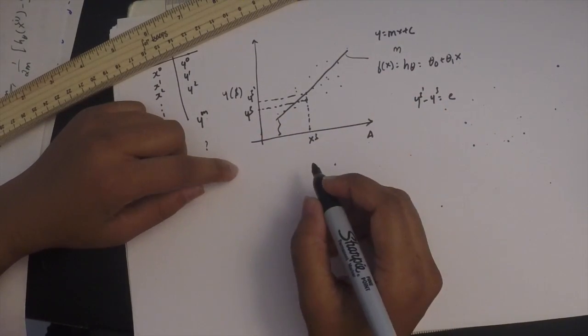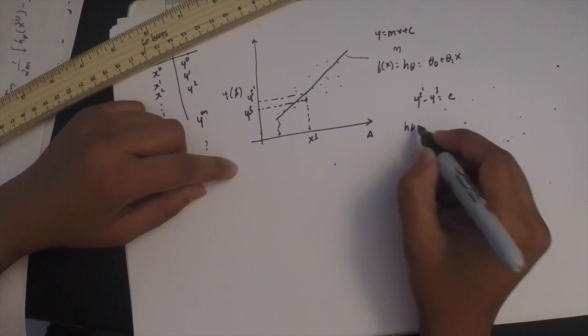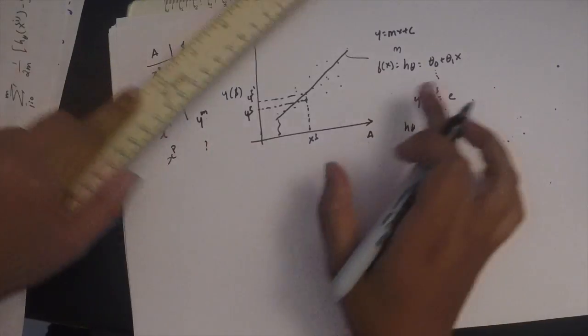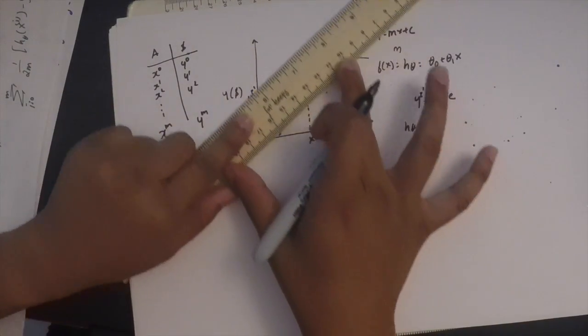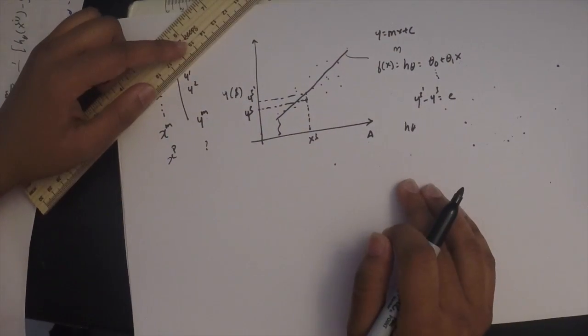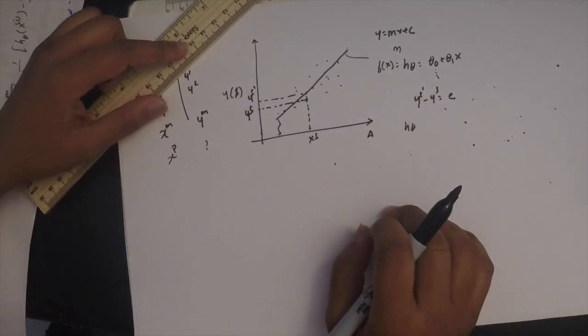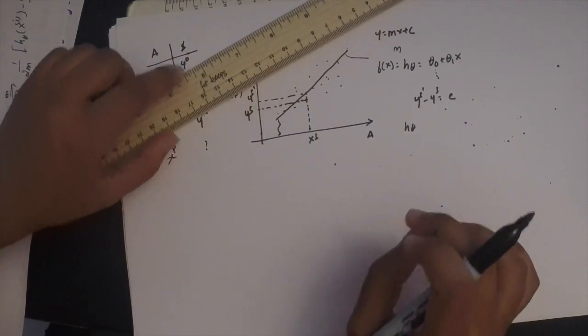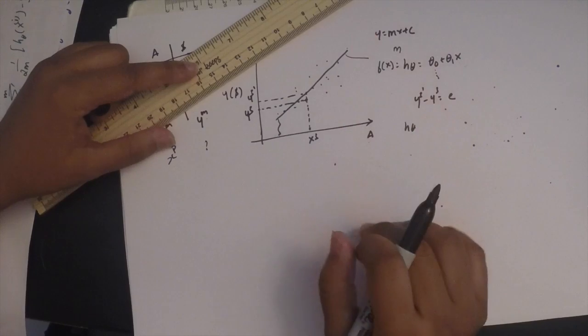Ideally, if we have an equation H of theta, you keep varying theta naught — that is your Y-coordinate — and then you vary theta1, which is basically the slope. You can put various lines on this graph and then find one such line that makes the least error for all the data points. To find the total error for making a wrong prediction, we can make an equation to represent this data set.